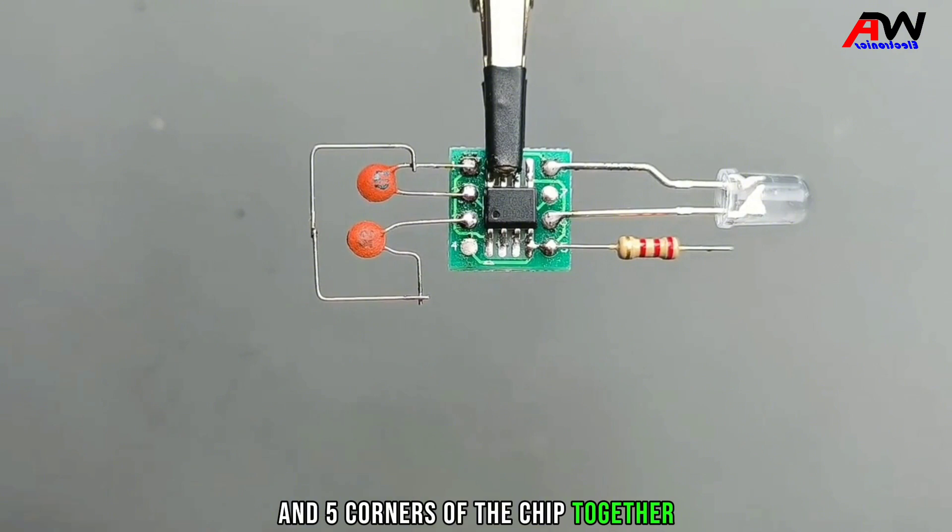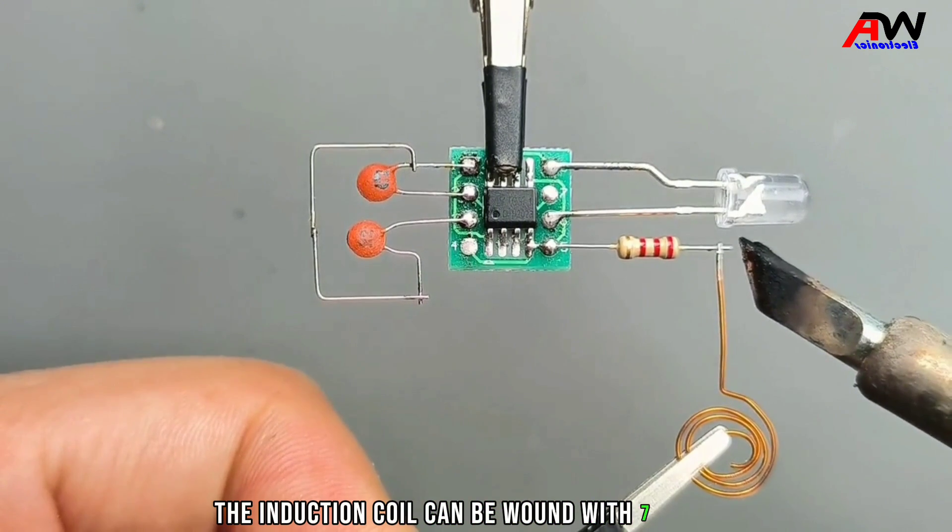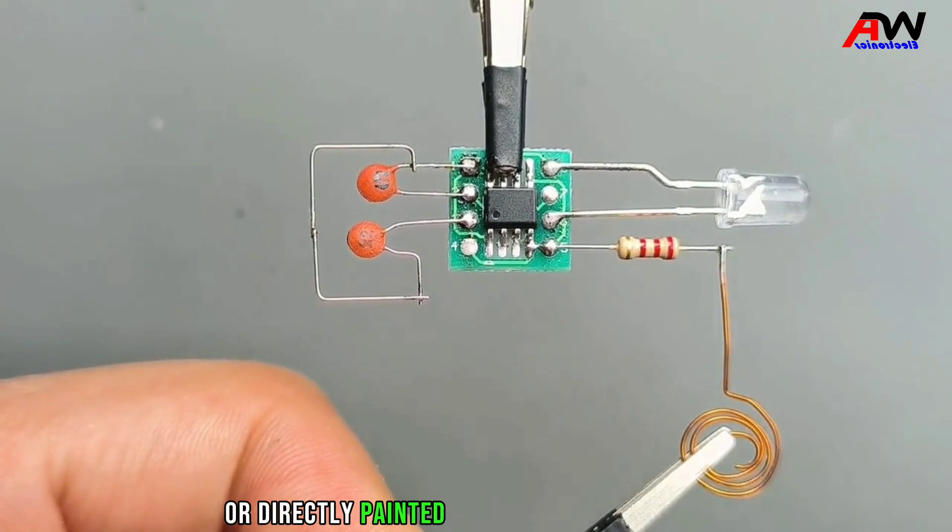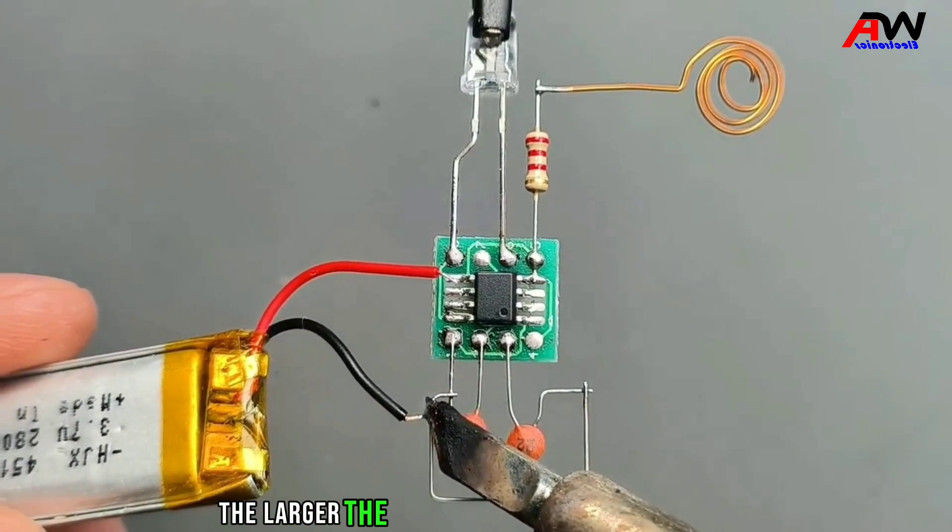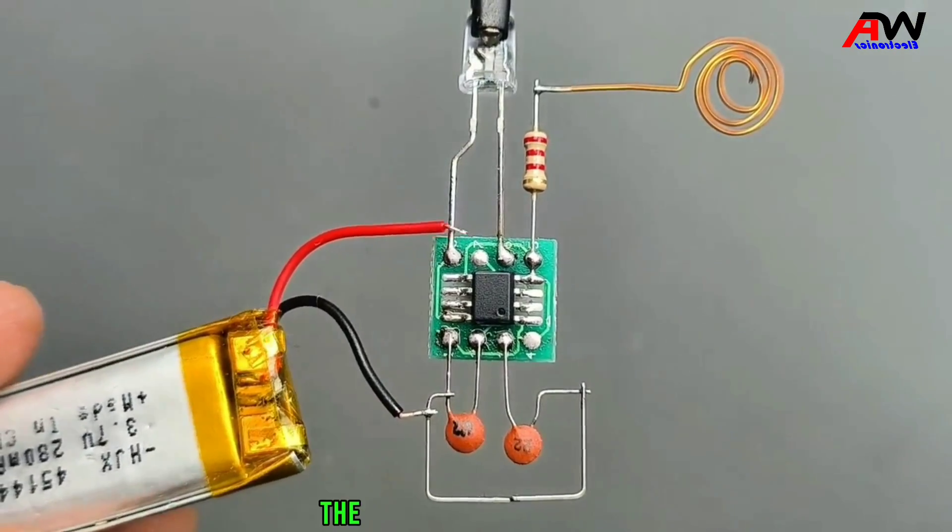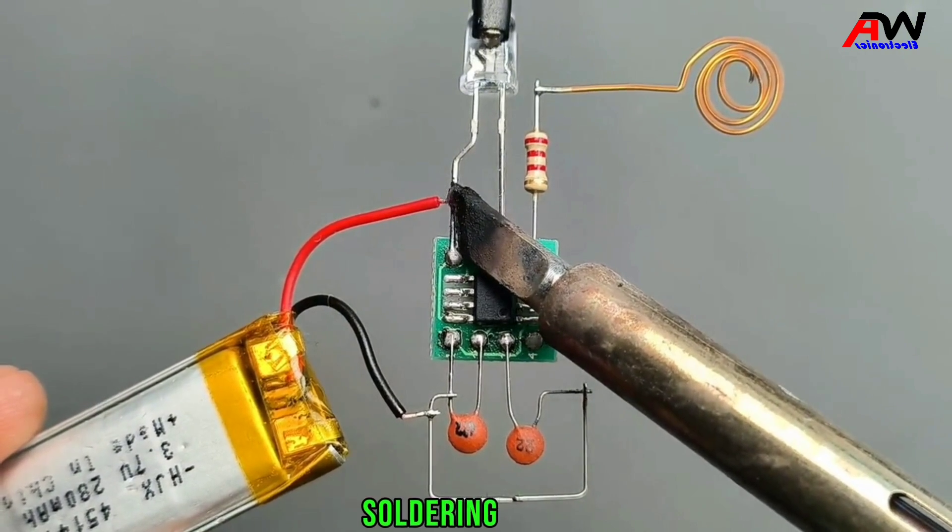The induction coil can be wound with 7 rounds or directly painted on the PCB circuit board. No specific parameter requirements. The larger the diameter of the induction coil, the farther the detection distance. Soldering is done.